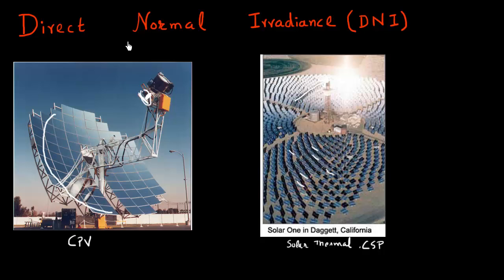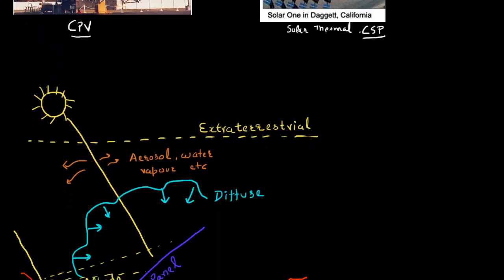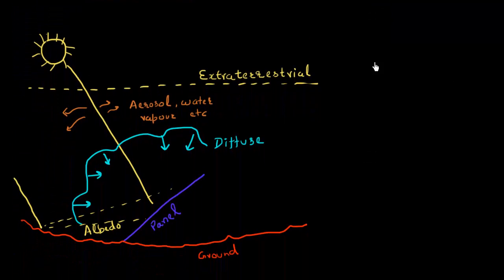So a very important metric for all these concentrated systems, either this concentrated photovoltaic system or this CSP system, is this directly normal incident light, or directly normal irradiance, which is many times abbreviated as DNI. So let me explain what this DNI stands for. Suppose you have on a cloudy day.